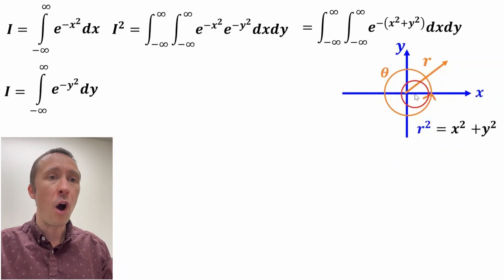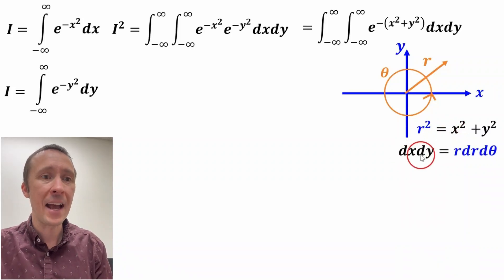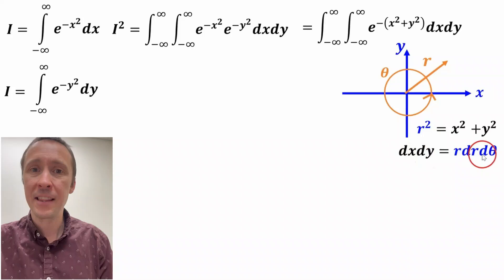So r, in terms of x and y, using the Pythagorean theorem, is r squared equals x squared plus y squared. And then dx dy equals r dr dθ.